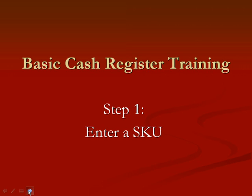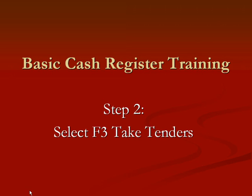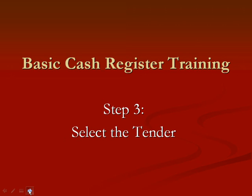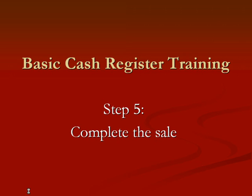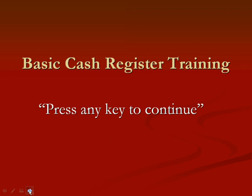From the video, you may remember step number one was to enter a SKU — you need to tell Anthology what the customer is purchasing. Step number two, select the F3 Take Tenders button. Step number three, select the tender the customer is paying with. Step number four, enter in the amount that they're paying. And then step number five, complete the sale. Don't forget to press any key to continue so the screen will clear and you're ready for the next transaction. Just that easy.